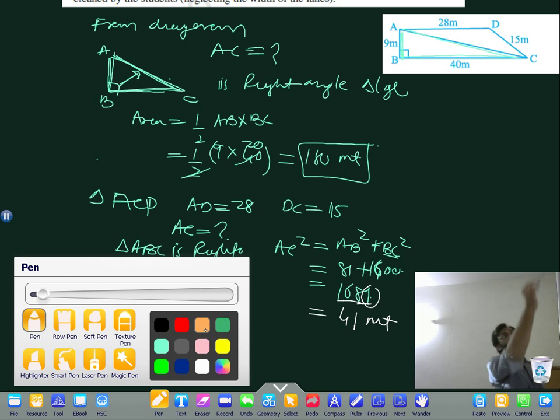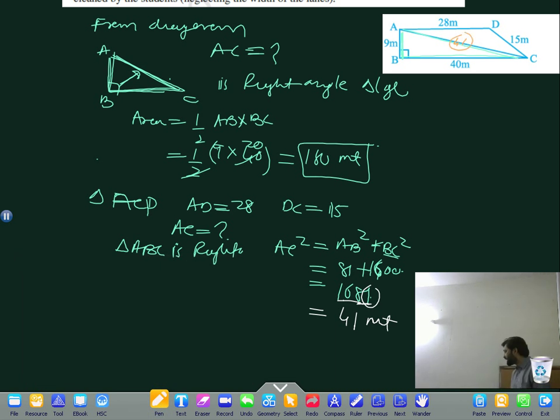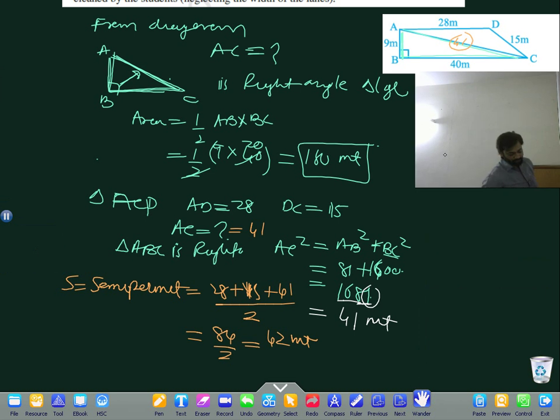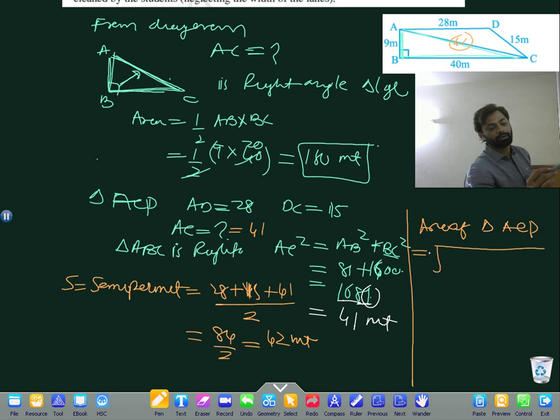We got all three sides of triangle ACD. AC equals 41. Now s, the semi-perimeter, equals 28 plus 15 plus 41 divided by 2, which equals 84 divided by 2 equals 42. Using this value of s, we can easily get the area. Area of triangle ACD equals the square root of s, s minus a, s minus b, s minus c. This is Heron's formula.